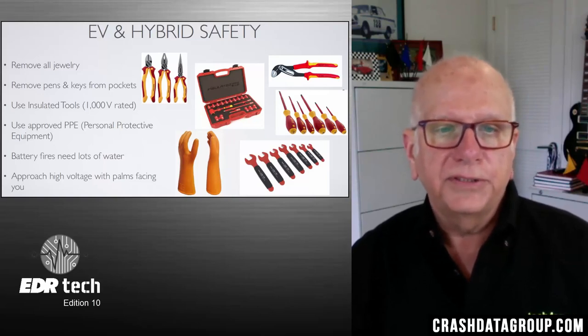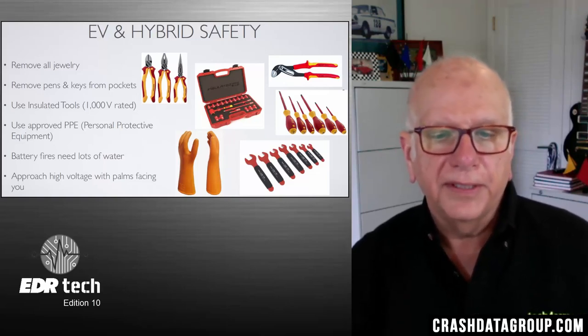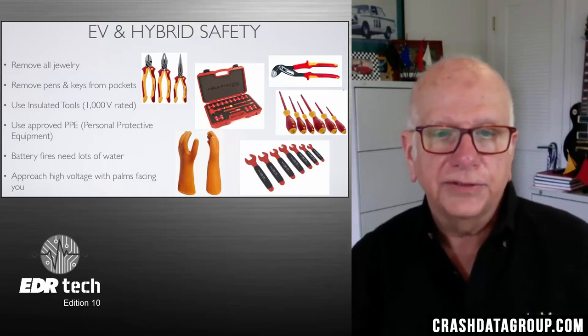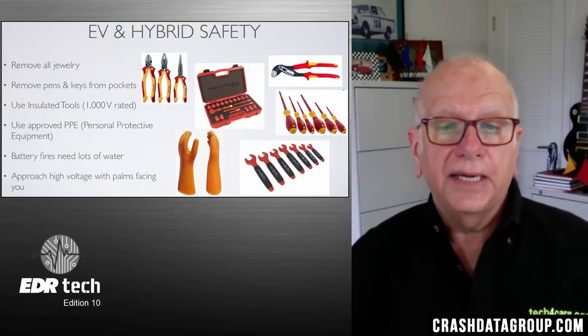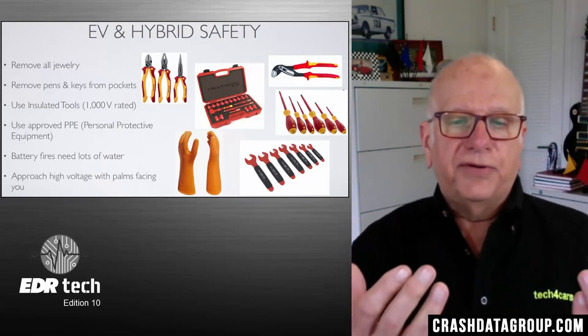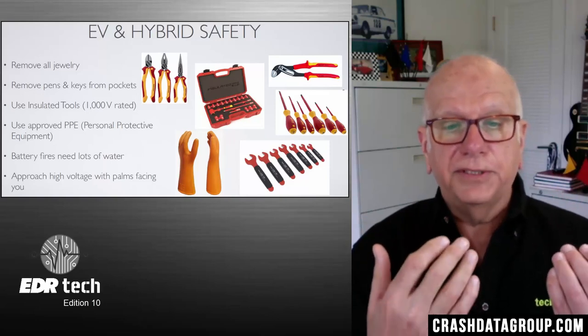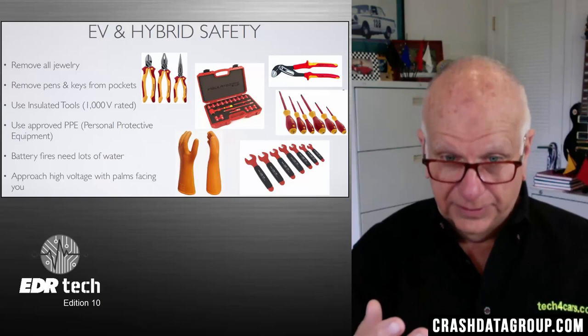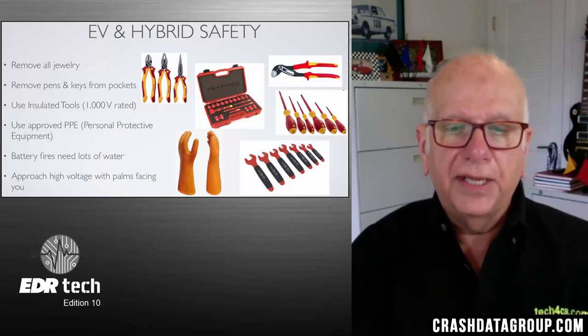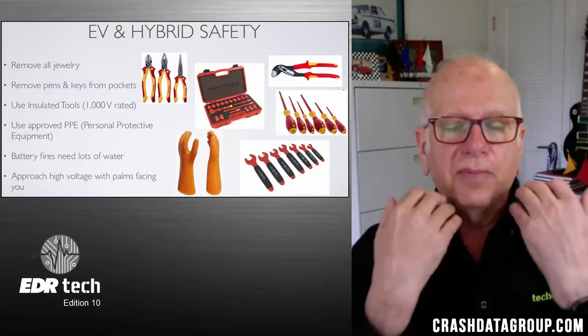Please use protective equipment. One important tip learned from working on industrial conveyor controls: approach high-voltage sources with your palms facing yourself, toward your face. If you accidentally touch something, your muscular reaction will tend to pull your hands away from the source rather than into it. Approach cautiously and keep that in mind whenever you're near high-voltage sources.